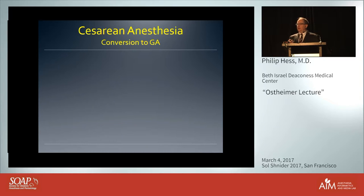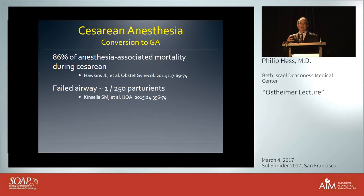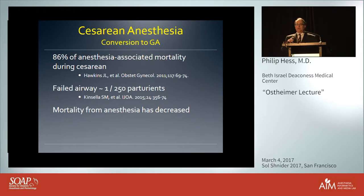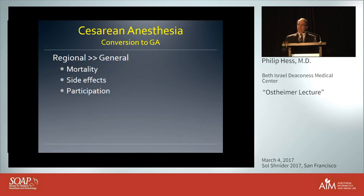Why do obstetric anesthesia providers care? Because the majority of anesthesia-associated mortality is associated with cesarean delivery. Failed airway, despite decades of discussion, still occurs in about 1 in 250 parturients. Mortality from anesthesia has consistently decreased over the decades, whether due to improved practice or equipment. This is a primary reason why anesthesiologists prefer regional anesthesia over general anesthesia, given its preferred side-effect profile and the ability for the patient and family to participate in delivery.